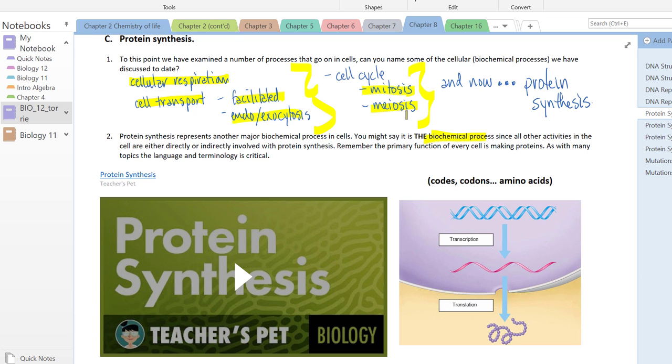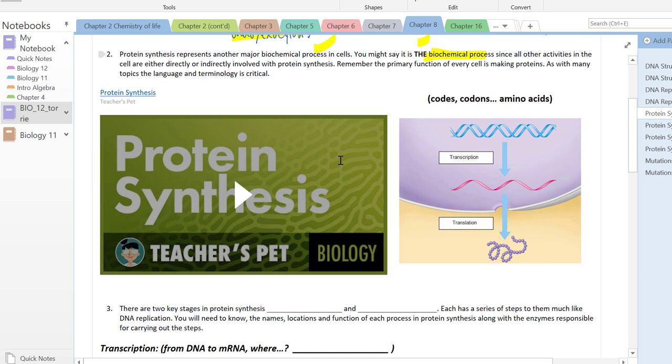In class we went through this and talked about the basic process. Protein synthesis occurs in two stages. The first stage is called transcription. This occurs in the nucleus where our DNA, which represents the genetic code, is transcribed into a molecule of mRNA. This mRNA consists of codons which are essentially triplets of nucleotides.